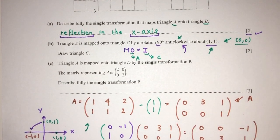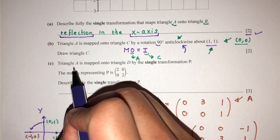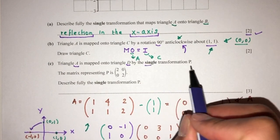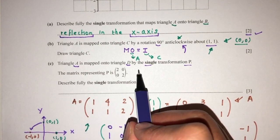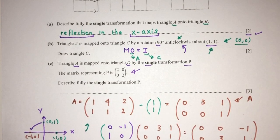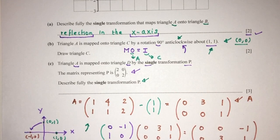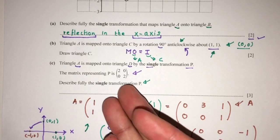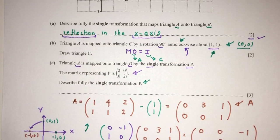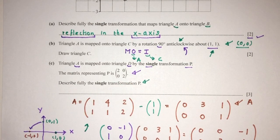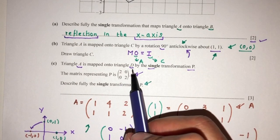Now, let's move on to part C of the question. Now, we have triangle A is mapped onto triangle D by a single transformation P. Now, the transformation P is given by this. Okay? Now, describe fully the transformation P. So there's two ways of doing that. So usually, by observation, you will know exactly. If you do many questions, you know already this is what transformation it is.